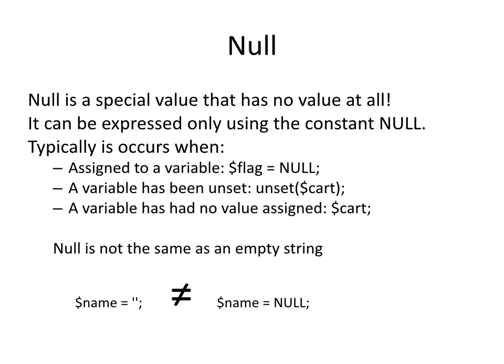Another type is null. Null is a very special value meaning that it is completely devoid of value. It can only be expressed using the constant NULL in all capitals. Typically, null occurs when it is assigned specifically to a variable, such as the variable flag having the assignment of NULL. Another way a variable can receive the value of null is by being unset — the cart variable supplied to PHP's unset() function would remove all values from cart. Lastly, a variable can be created but have no value assigned to it, such as when cart is declared but nothing assigned. It is very important to remember that in PHP, null is not the same as an empty string.